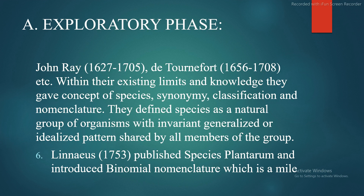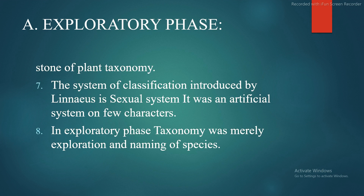Linnaeus (1753) published Species Plantarum and introduced binomial nomenclature, which is a milestone for plant taxonomy. The system of classification introduced by Linnaeus — the sexual system — was an artificial system based on few characters. In the exploratory phase, taxonomy was merely exploration and naming of species.